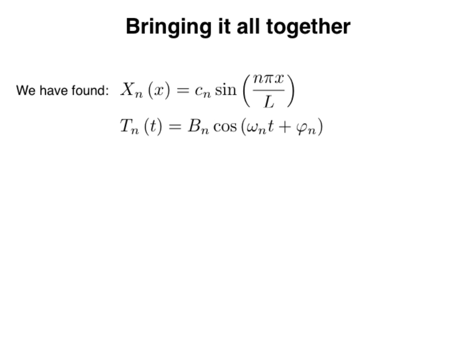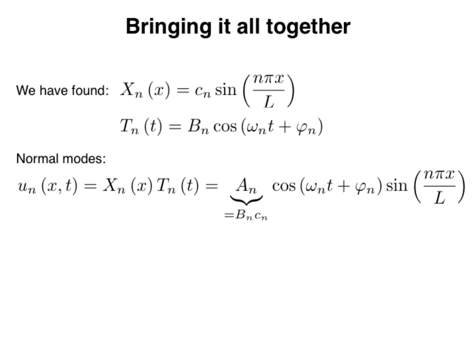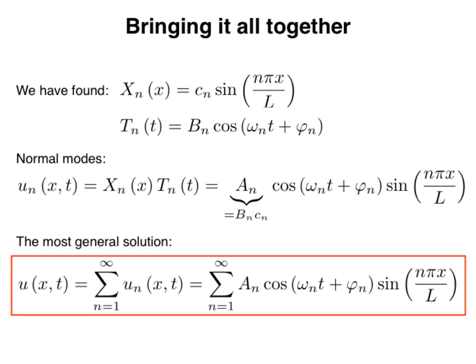We are almost done. We have found the solutions for X(x) and T(t). All that remains is to write the deflection u(x, t) as the product of these two single-variable functions. The solutions we obtain for u(x, t) are called normal modes. We replace the product of arbitrary coefficients b_n and c_n by a single arbitrary coefficient a_n. The most general solution for u(x, t) is then written as an infinite sum of normal modes.